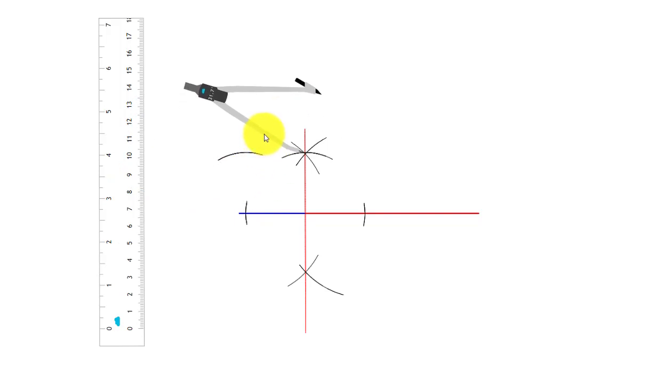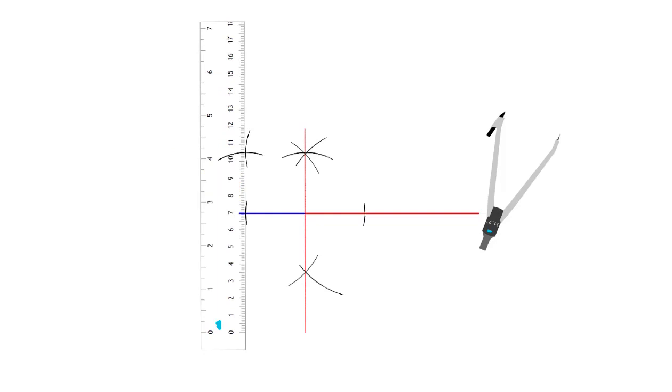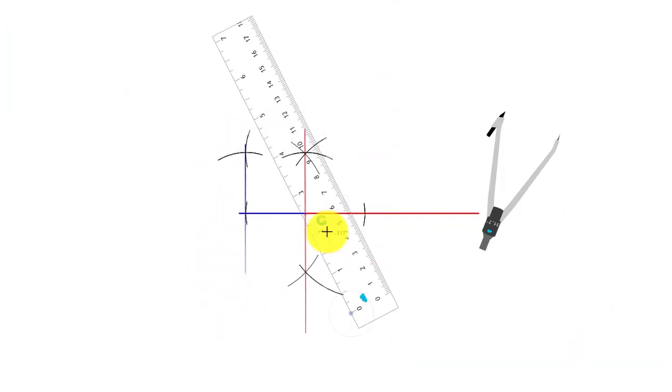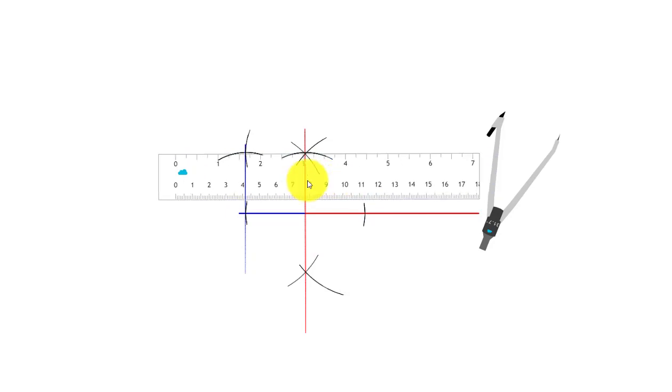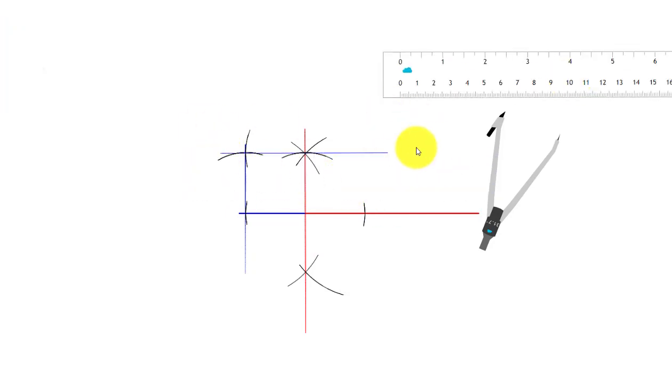Now we have just to connect these four points and you will get your square. So this is our square.